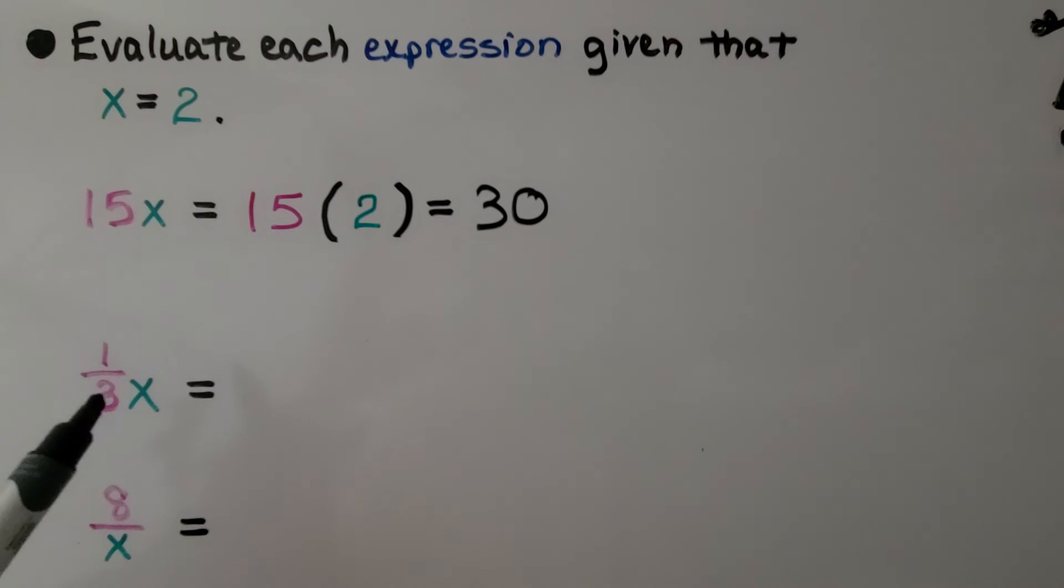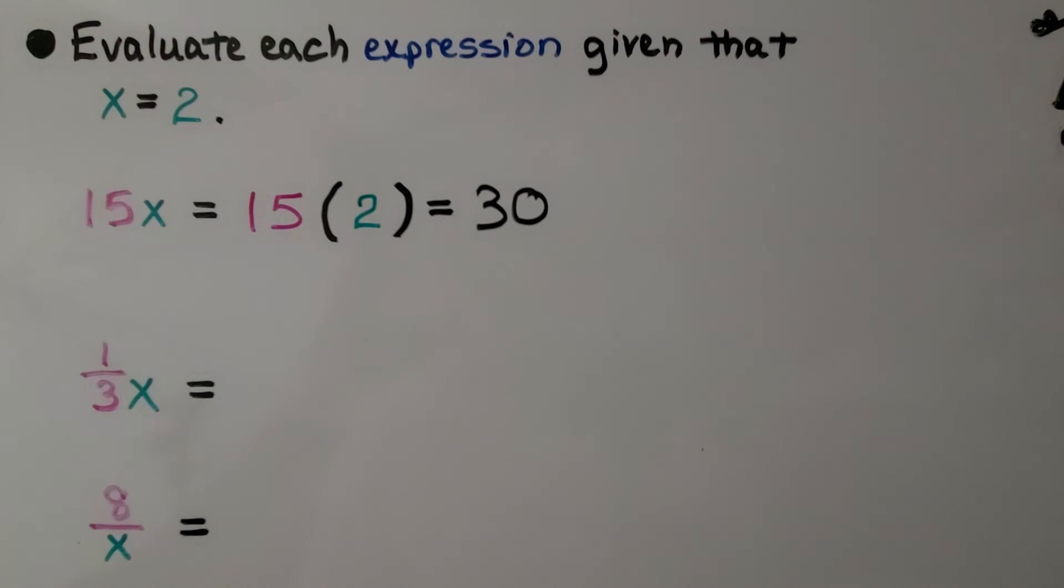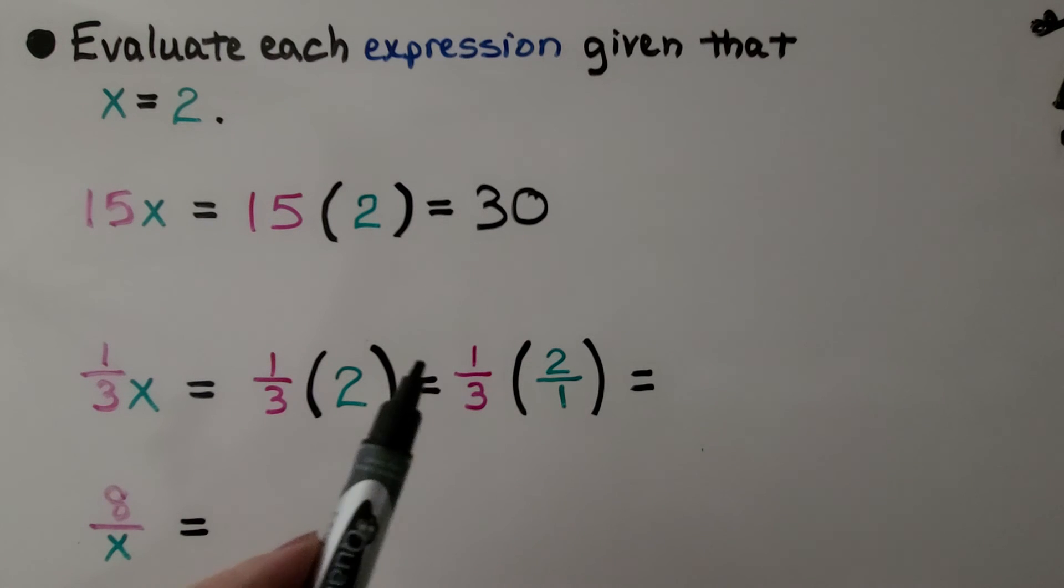Here we have 1 third x. So we know we're going to multiply 1 third times 2. We can multiply the 1 third times 2 by writing the 2 over a 1 and multiplying straight across.